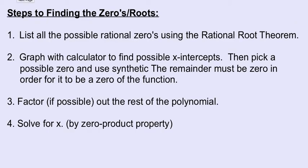So here are the steps that you would go through to find the zeros or the roots. Number one, list out the possible rational zeros using the rational root theorem. Number two, use a graphing calculator to find the possible x-intercepts. Then pick one of those and use synthetic division. If you get a remainder of zero, then that is a zero of the function. Step three, factor if possible out the rest of the polynomial and then solve for x using the zero product property.